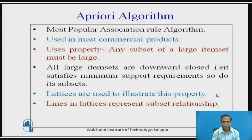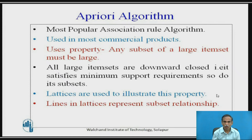Apriori uses the property that any subset of a large item set must also be large. All large item sets are downward closed — that is, they satisfy a minimum support requirement, and so do their subsets, because the subsets are also large enough. Lattices are used to illustrate this property of formation, adding elements and forming a lattice, where lines in the lattice represent the subset relationship.